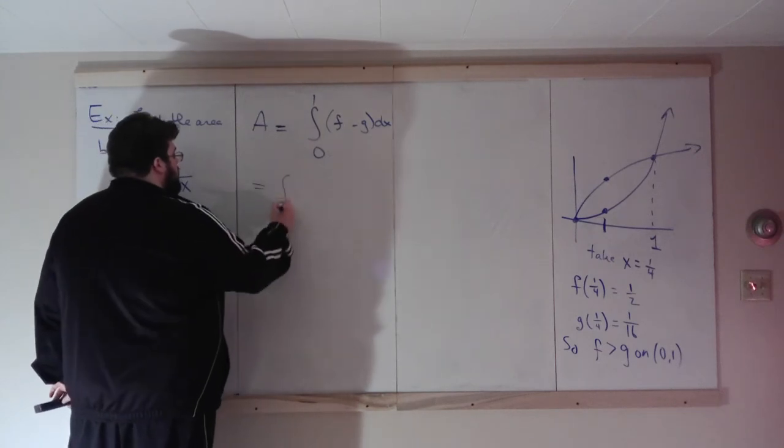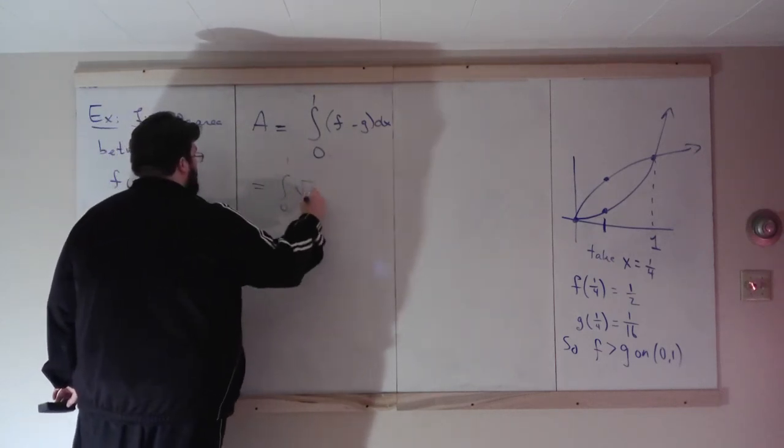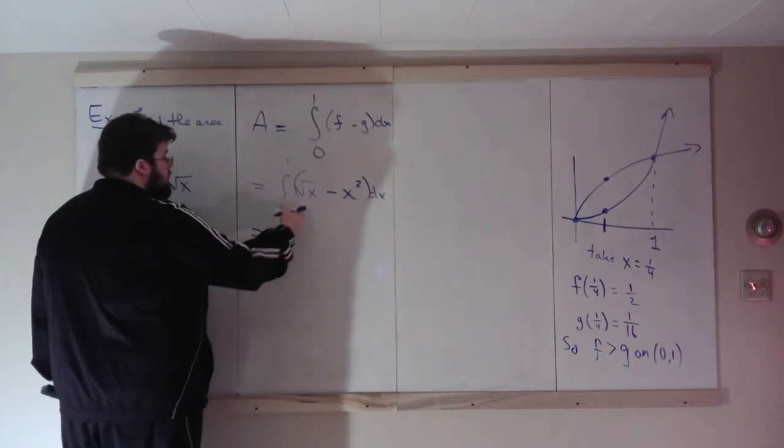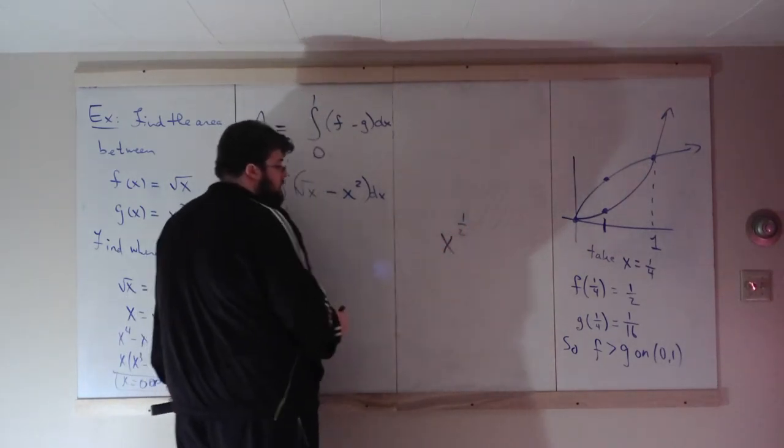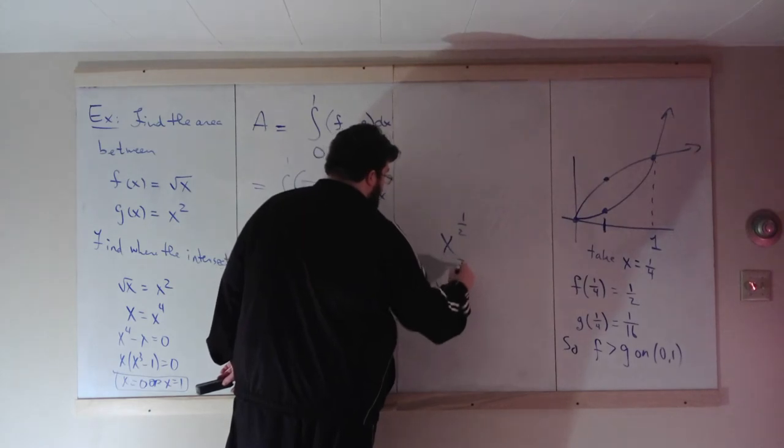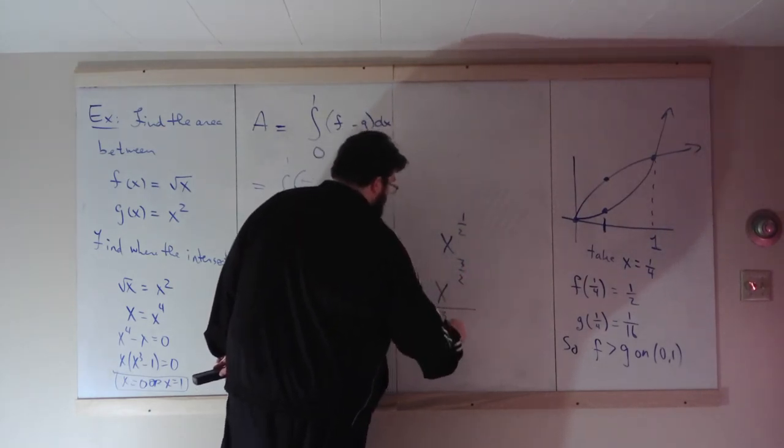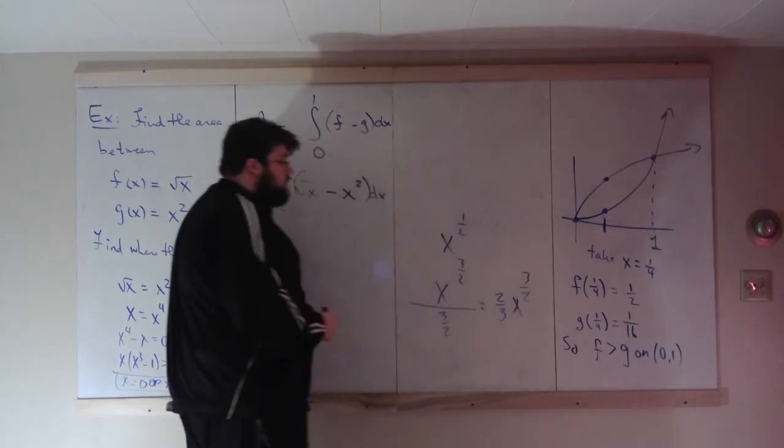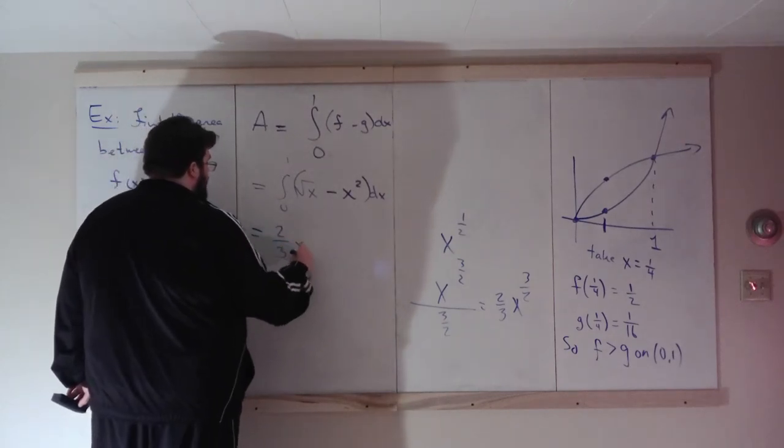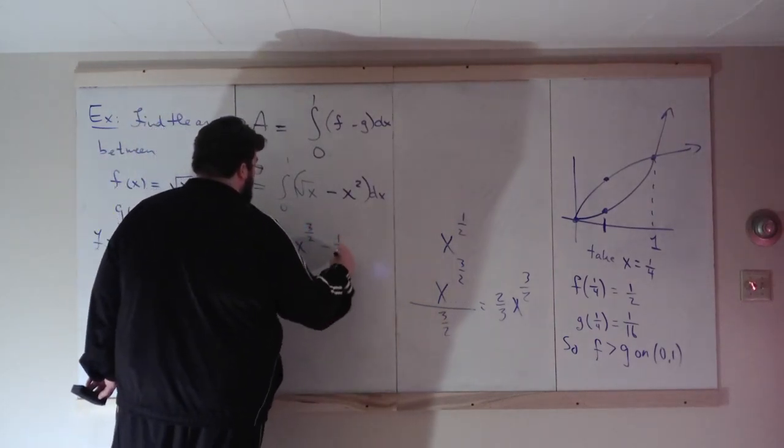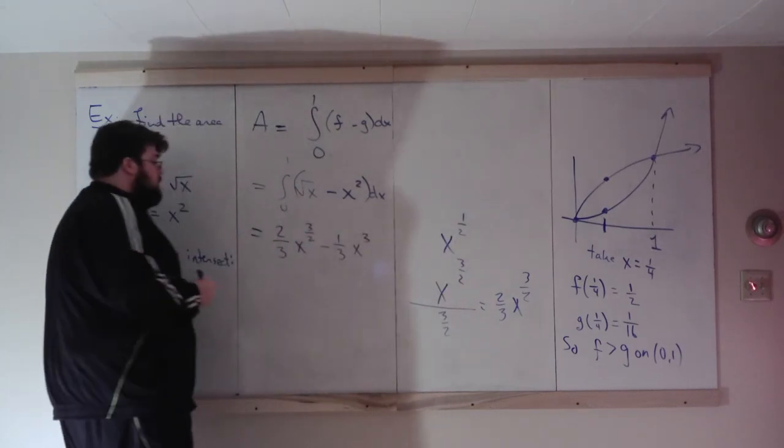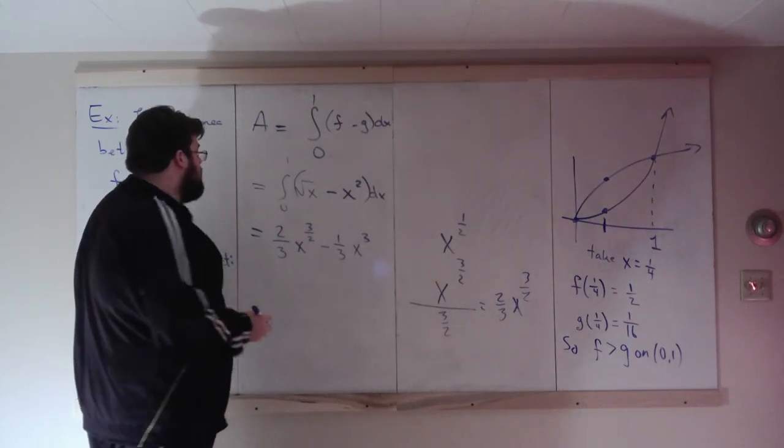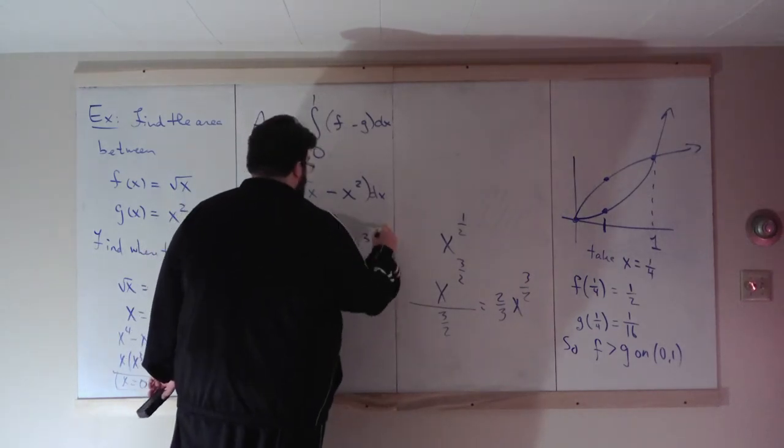So let's do this computation. Integral 0 to 1, F is root X minus G, so minus X squared. What's this integral? X to the 1 half, an antiderivative would be X to the 3 halves divided by 3 halves, which is the same as 2 thirds X to the 3 halves. So we get 2 thirds X to the 3 halves minus 1 third X to the 3. Take the derivative here, you get X to the 1 half minus X squared. So that's right, and we're on the interval 0 to 1.